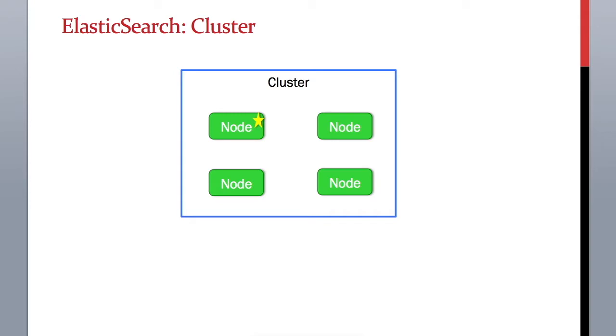A group of these nodes working together and sharing their data and load forms a cluster. A cluster will have one master and various data nodes or load balancer nodes. They all work together to store the data, which is basically the Lucene index, and to process requests, which are ElasticSearch requests to retrieve data or search within those indexes.